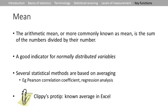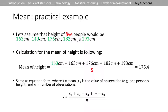Let's go through a simple example. Assume we have the heights of five people: 163, 149, 176, 182, and 193 centimeters. The calculation for the mean is to sum the heights and divide by the number of people, giving a result of 175.4 centimeters.